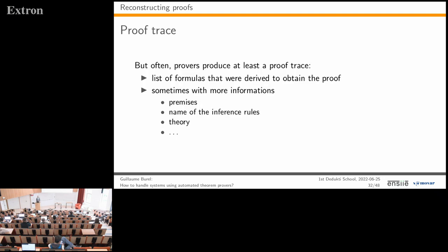Instead, we use another approach. Nowadays provers produce at least a proof trace—a list of formulas derived to obtain the proof—and sometimes more: the premises used to obtain each formula, the name of the inference rules applied, the theory in which the rule works, etc.